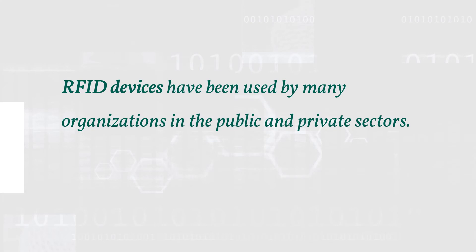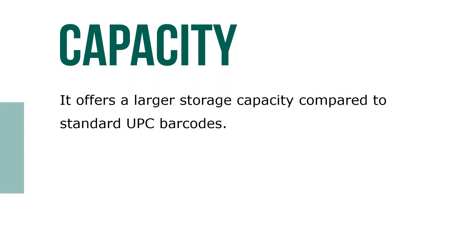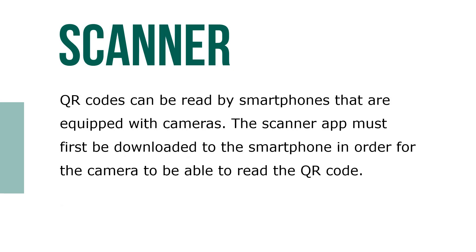RFID devices have been used by many organizations in the public and private sectors to offer access to facilities, systems, and efficient and effective business operations. A QR (quick response) code is a matrix barcode consisting of black nodules arranged in a square pattern on a white background. It offers a larger storage capacity compared to standard UPC barcodes. Features include high storage capacity, small printout size, dirt and dust resistance, readable from any direction, and compatible with Japanese character sets. QR codes can be read by smartphones equipped with cameras. A scanner app must first be downloaded to the smartphone in order for the camera to read the QR code.